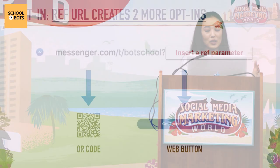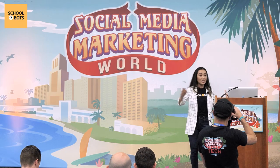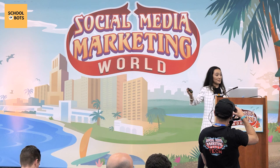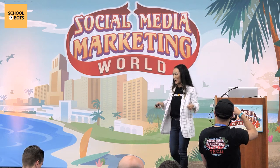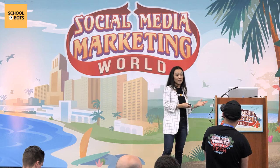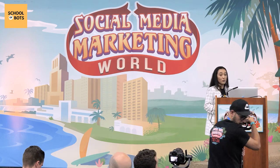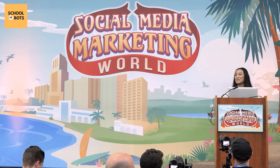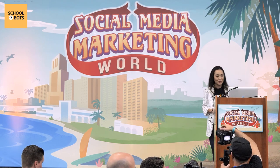You can also turn that ref URL into two more opt-in types: a QR code and a web button. So those are all your opt-in options. Hopefully that gave you some ideas and, if you've never seen those before, your mind is starting to expand as to where you can implement this inside your funnels.